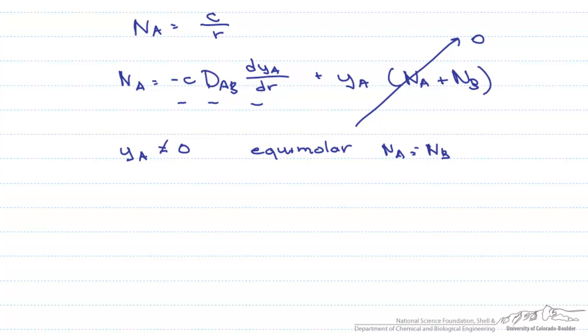What we are left with is N sub A equals minus C D sub A B D Y A D R. However, we can't initially integrate that because N sub A is a function of R.